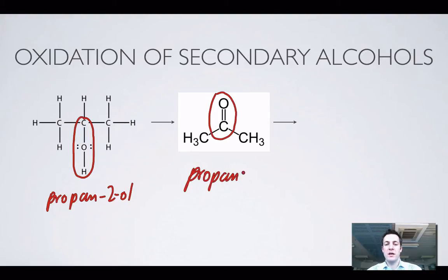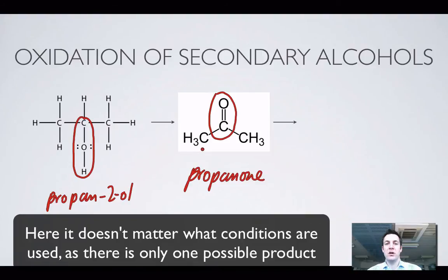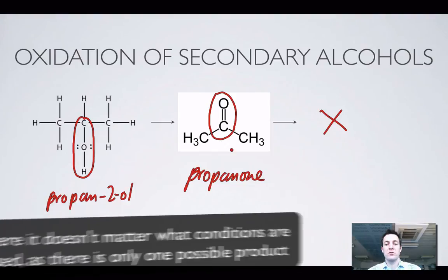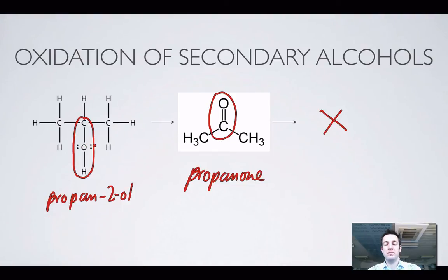If I oxidise a secondary alcohol with one of those two oxidising agents that we've talked about before, I won't form an aldehyde — I'll form a ketone. And ketones can't be oxidised further under the sort of conditions that we look at in this course. So if I have a secondary alcohol I can oxidise it to a ketone, but I can't oxidise a ketone.